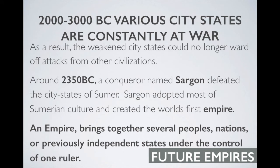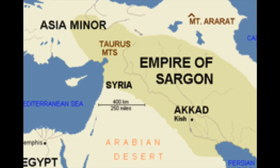From about 3000 to 2000 BC there was constant bickering and fighting among the various city-states in Sumer. It wasn't until 2350 BC that one man, Sargon, was able to defeat all the city-states in Sumer and create the world's first empire. An empire is when you bring together people from different areas and different nations and place them all under the control of one ruler. This first empire of Sargon looked something like this.